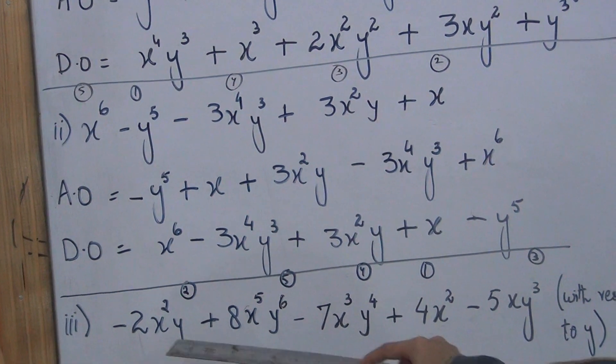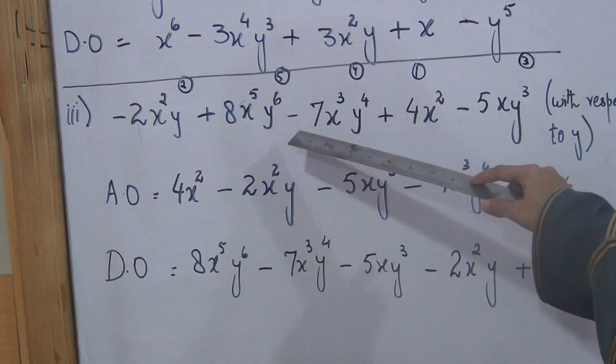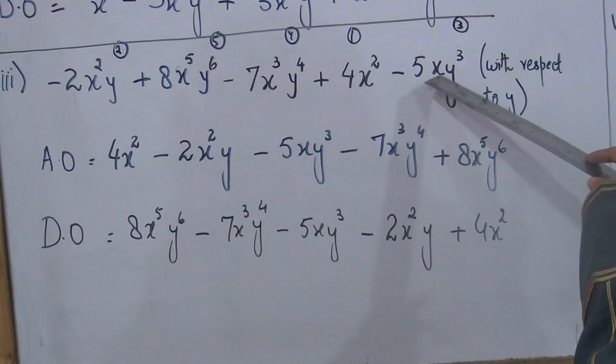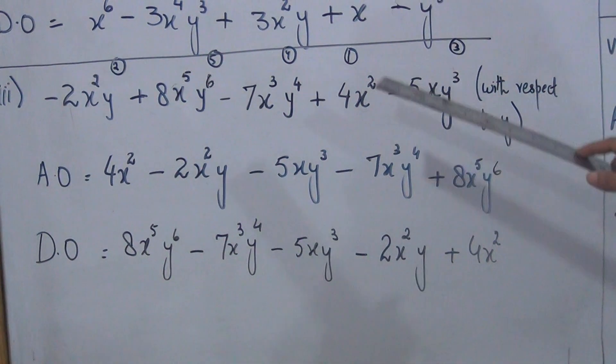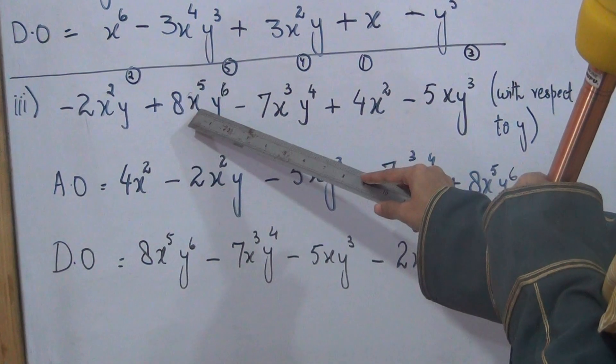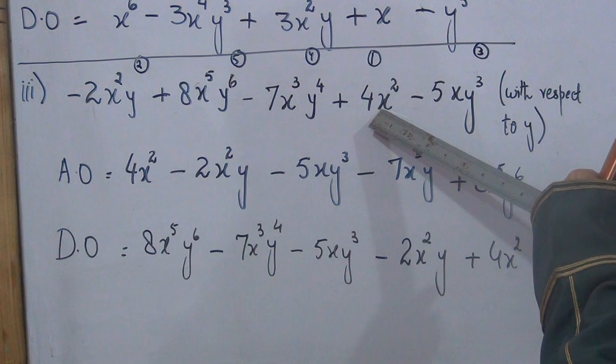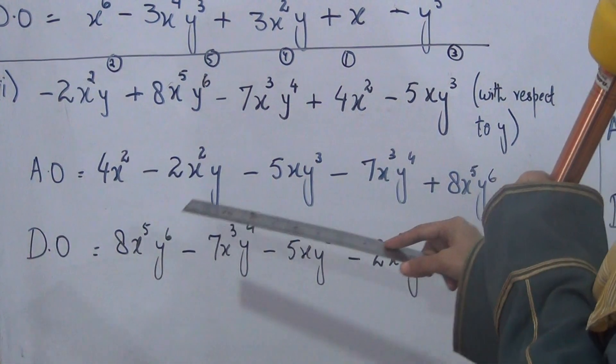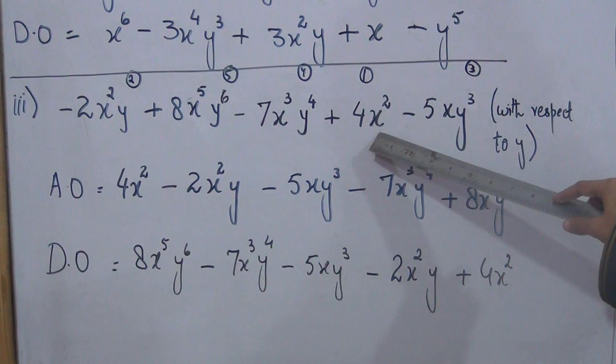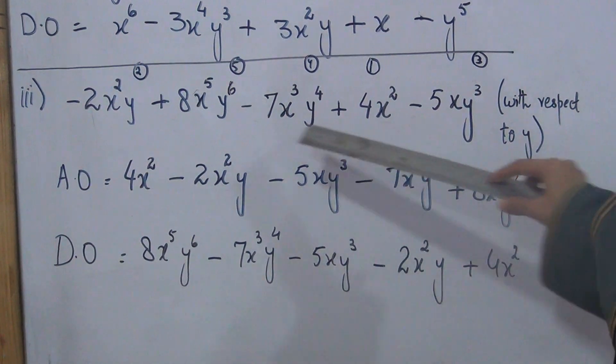Now the third expression is minus two x square y plus x raise to power five y raise to power six minus seven x cube y4 plus four x square minus five x y cube. In this expression, when we arrange by x, x power is two, x power is five, x power is three, then x power is two again. Should I write this first or this first? Since x has duplicates, I will not arrange by x. Since the other variable y is present, let me see if this is arranged by y.